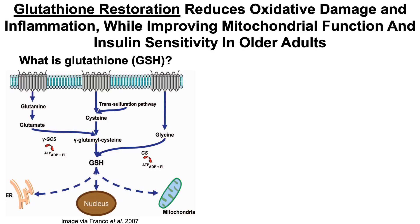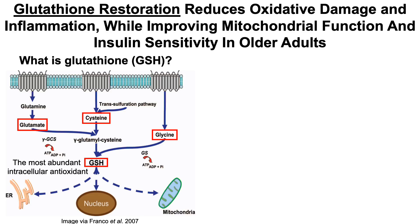What is glutathione? Glutathione is a tripeptide, which means it's comprised of three amino acids: glutamate, cysteine, and glycine. It's the most abundant intracellular antioxidant in terms of intracellular concentration. Glutathione has important roles in maintaining mitochondrial function, affecting gene expression in the nucleus, and affecting protein folding in the endoplasmic reticulum — just a few examples of its importance.